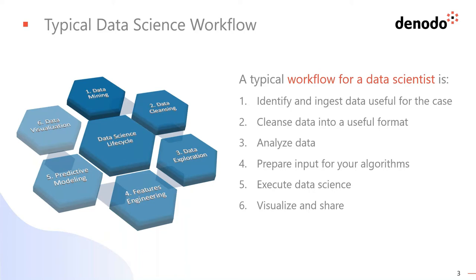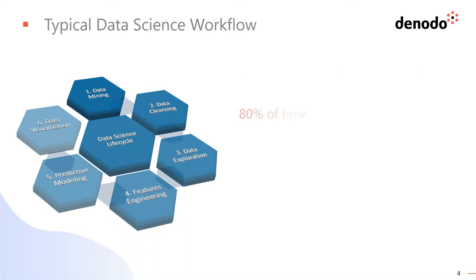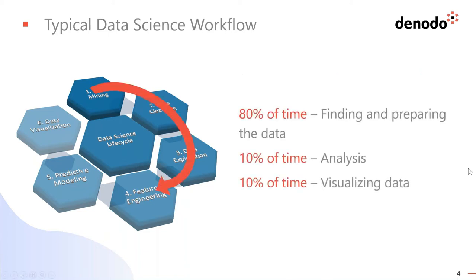Only when we have all this done, we can go and start our predictive model, trying to train our datasets using various algorithms and features, combining and playing with them. Finally, when we get to acceptable results, we need to visualize them. The thing is, that famous 80% of the time goes to these four initial steps — finding and preparing the data. Only 10% goes to the analysis itself and another 10% to visualization.